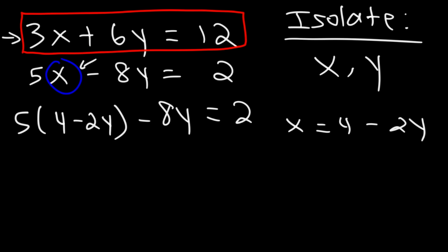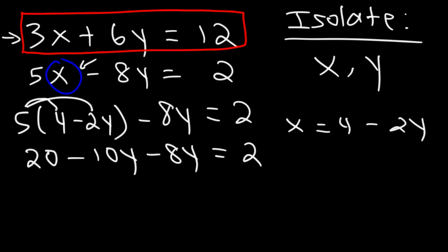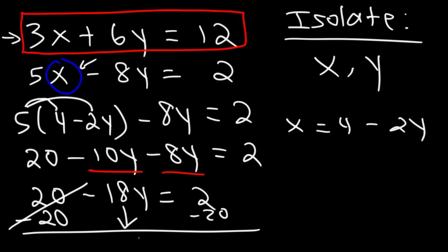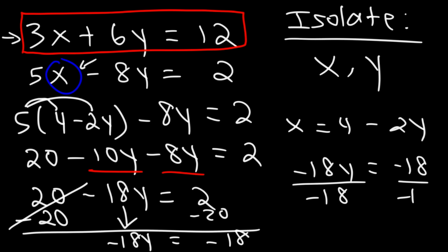Now we have one equation with one variable, so we can calculate the value of y. Let's distribute the 5: 5 times 4 is 20, and 5 times negative 2y is negative 10y. Bring down the negative 8y. Combining like terms: negative 10y minus 8y is negative 18y. Subtracting 20 from both sides gives negative 18y equals negative 18. Dividing both sides by negative 18, y is equal to 1.